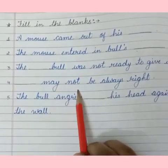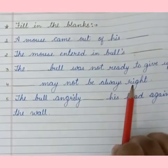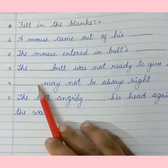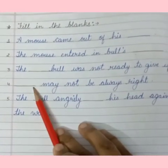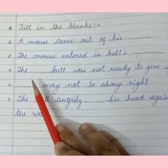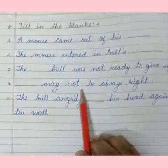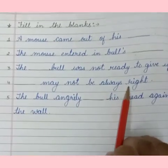Fourth sentence: Blank may not be always right. Who is not always right? Might — which means powerful. Might may not be always right.